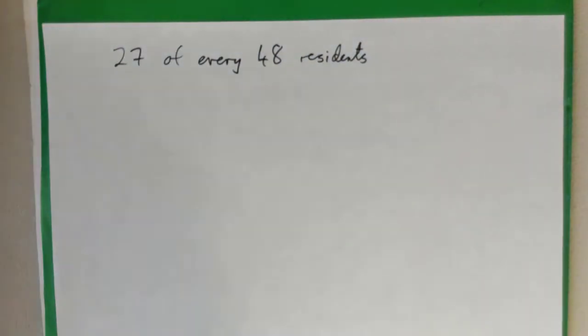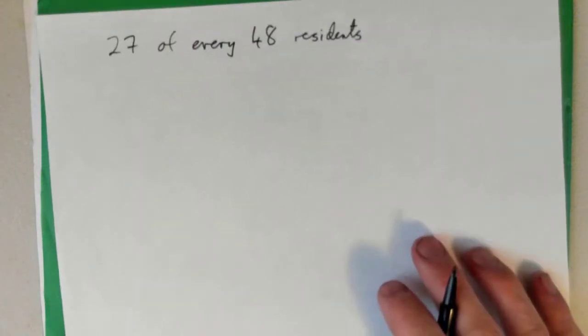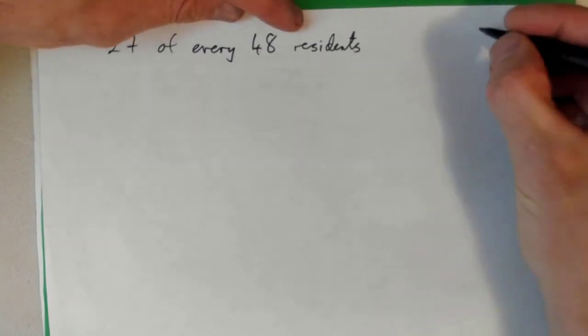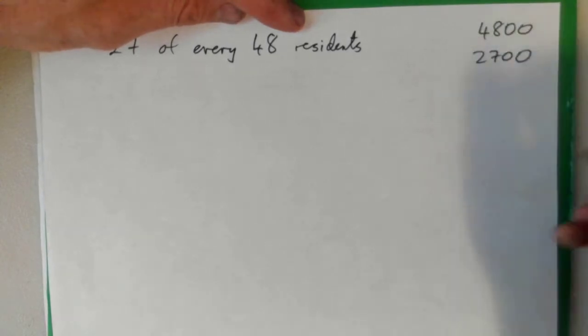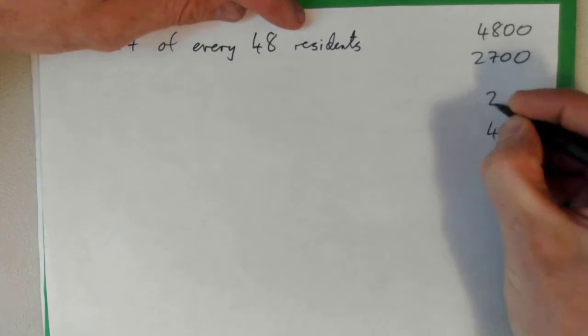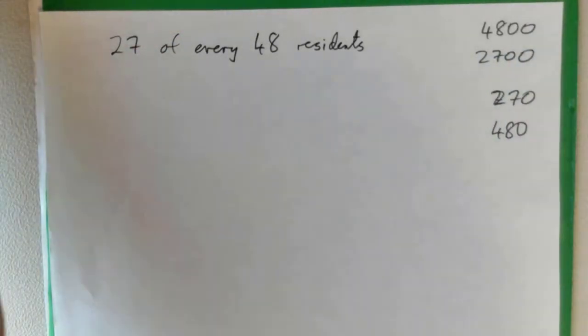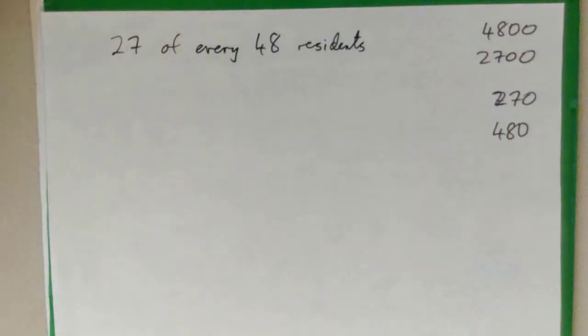Does not mean there's only 48 in the town. It means that for every 48, 27 are male. So it could be that there's 4,800 in the town and 2,700 are male, or it could be that there's 480 in the town and 270 are male.